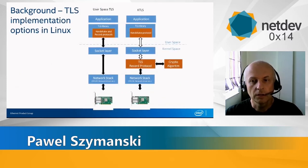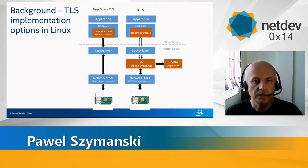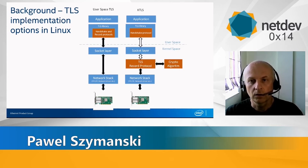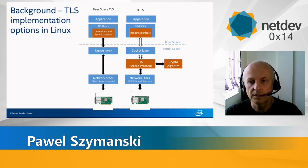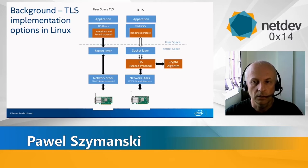Here you can see two options to implement TLS. The first one I call user space TLS, where all the TLS functionality is implemented in a TLS library in user space. The second option is kTLS, or kernel TLS, where the handshake protocol is still implemented in the TLS library, but the record protocol is implemented inside the kernel, and the TLS record protocol implementation uses a crypto algorithm module to perform actual data encryption and decryption.